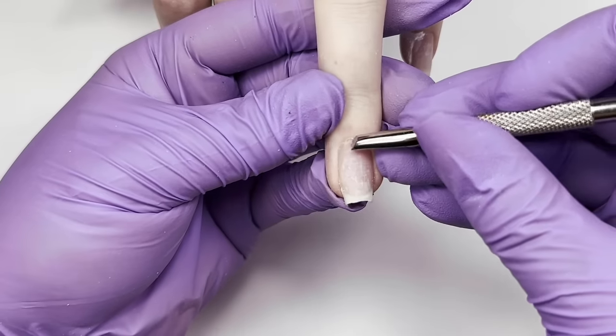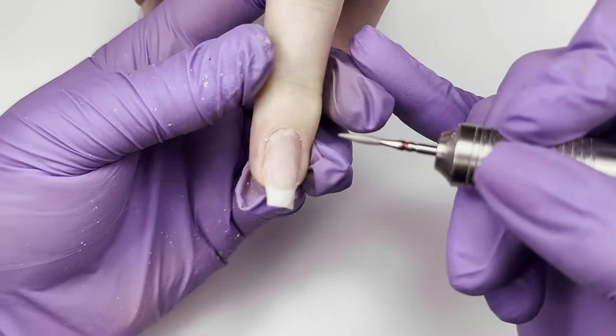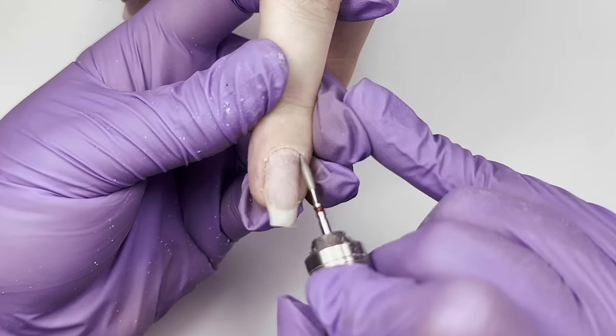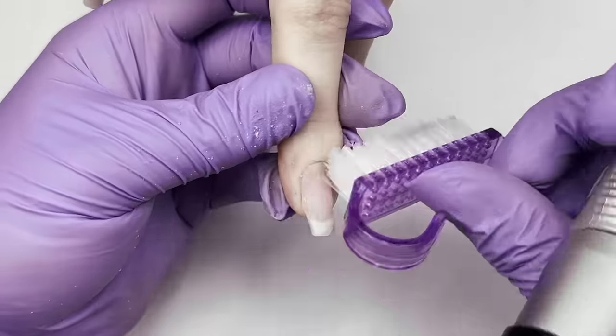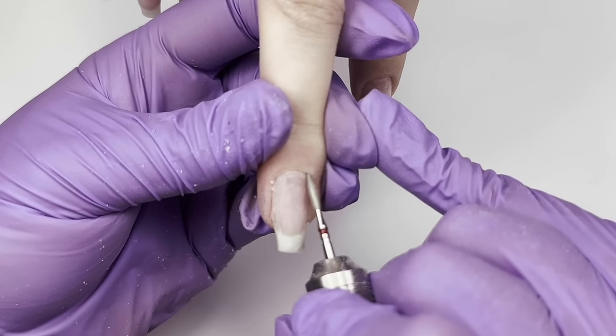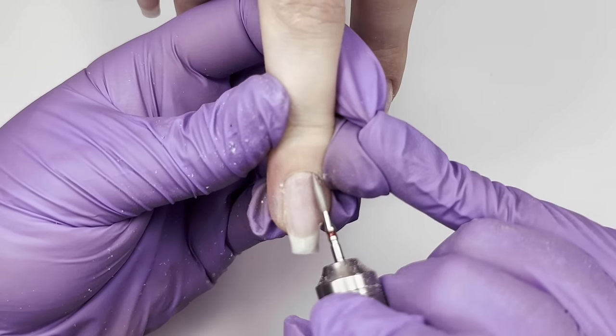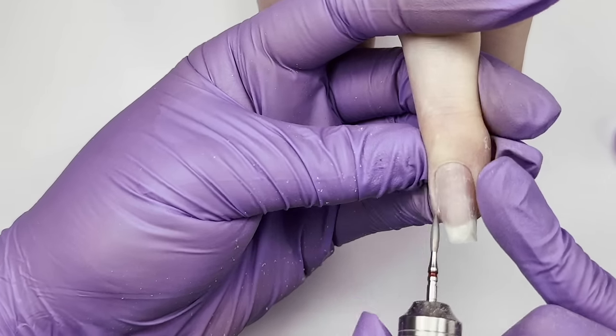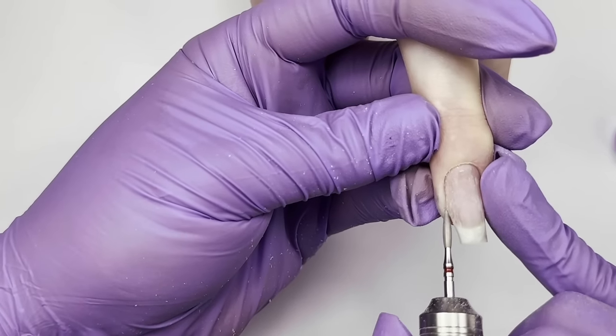And finally, the main reason is that when you do the product removal with electric nail file, you can leave a thin layer of the old product if there is no lifting and discoloration and apply the new product on top. And you definitely cannot do this with soak-off method because it is going to melt the product all the way and you will need to remove it completely.